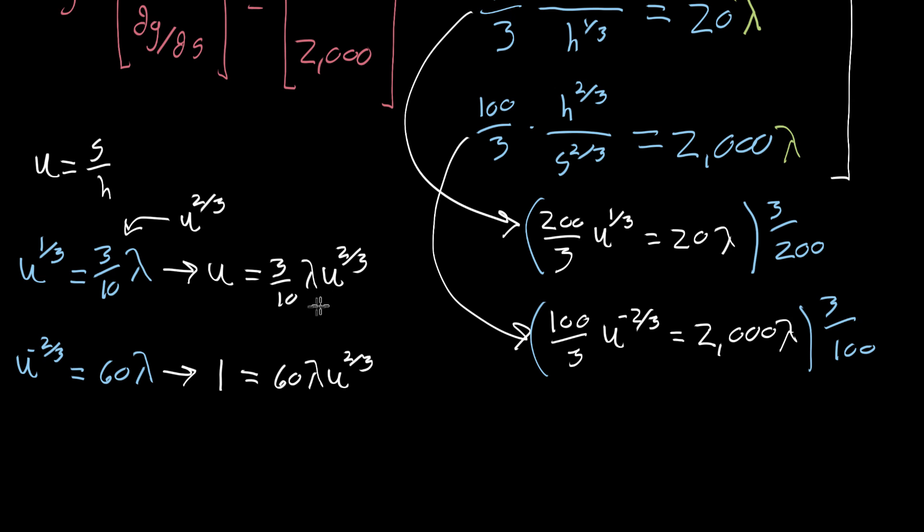Now these right sides look very similar, and the left sides are quite simple. So I'm gonna multiply this top one by whatever it takes to make it look exactly like that right side. So in this case I'm gonna multiply that top by 10, which will get it to three, and then by another 20 to make that constant 60. So I'm gonna multiply this entire top equation by 200, and what that gives me is that 200 times U is equal to 60 times lambda times U to the two thirds.